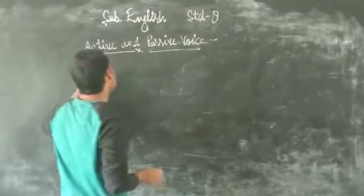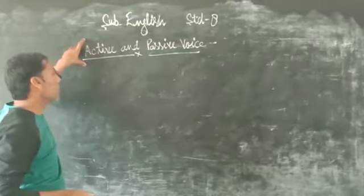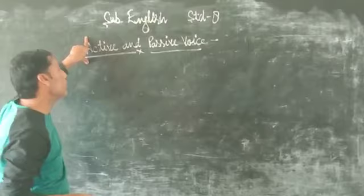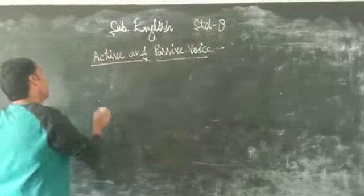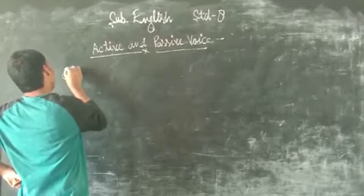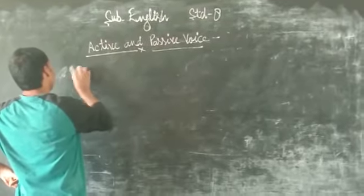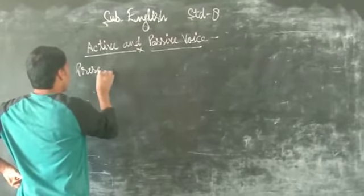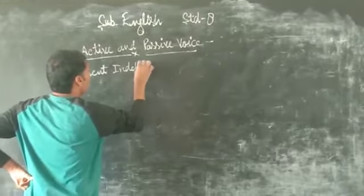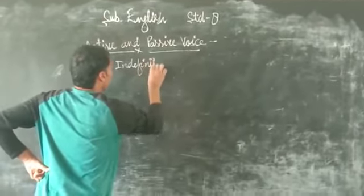In active voice, a sentence always starts with a subject. And in a passive voice, a sentence always starts with an object. First we will read about the present indefinite tense.